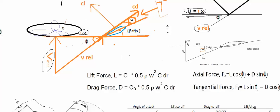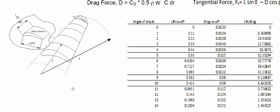In this video, let's discuss the forces acting on a wind turbine blade. The blade is divided into N number of elements, where N is chosen by the designer. For example, say we divide it into 20 elements. Consider any one element — it has a chord length C and a width B.